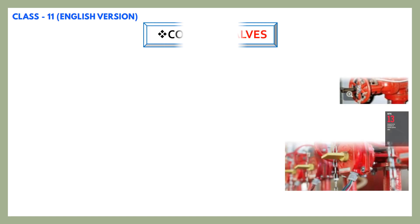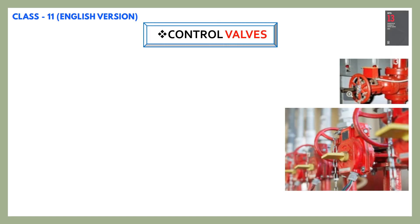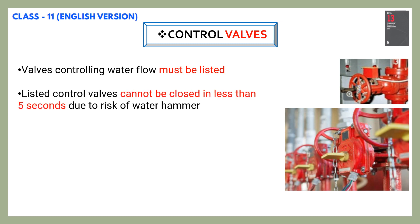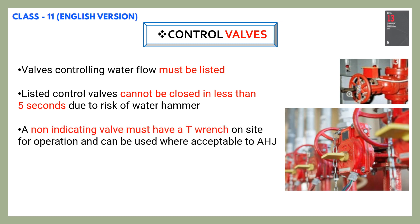Let's have a look at control valves. Control valves can be gate valves or butterfly valves as per NFPA 13. Valves used to control water flow must be listed, and listed control valves cannot be closed in less than 5 seconds due to the risk of water hammer. An indicating valve must have a T-range on site for operation and can be used where acceptable to the AHJ. The control valve's minimum working pressure is 175 psi.